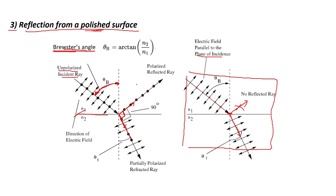This way we get a polarized light. This Brewster's angle can be calculated by a specific formula.